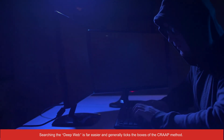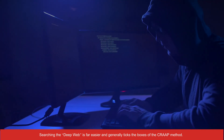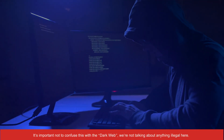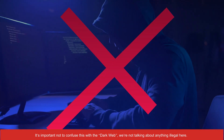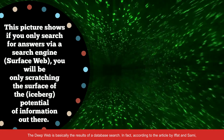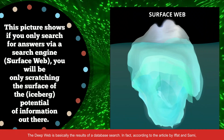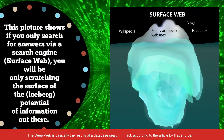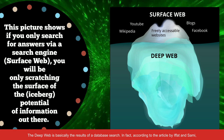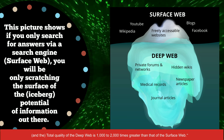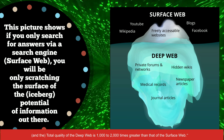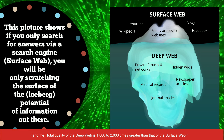Searching the deep web is far easier and generally ticks the boxes of the CRAAP method. It's important not to confuse this with the dark web — we're not talking about anything illegal here. The deep web is basically the results of a database search. In fact, according to the article by Ifat and Sammy, the deep web is currently 400 to 550 times larger than the commonly defined World Wide Web, and the total quality of the deep web is 1,000 to 2,000 times greater than that of the surface web.